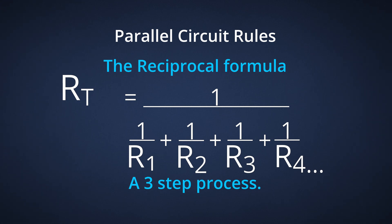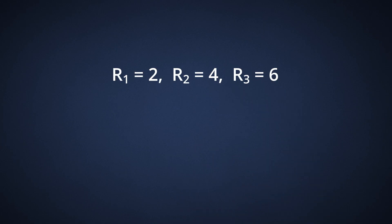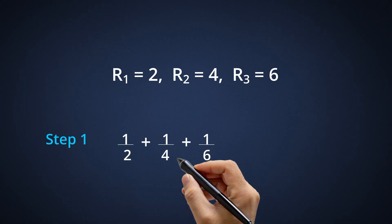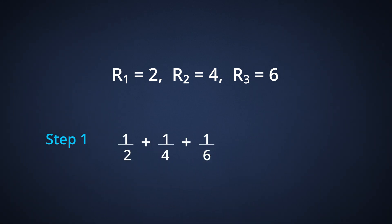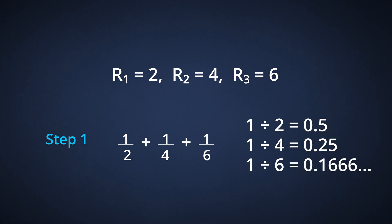You can also do the math with a basic calculator, since the three-step process only requires addition and division. For example, find the total resistance for R1 = 2, R2 = 4, R3 = 6. Step 1: put a 1 over each resistor and do the division. 1 divided by 2 equals 0.5; 1 divided by 4 equals 0.25; 1 divided by 6 equals 0.1666.